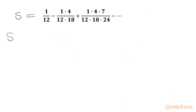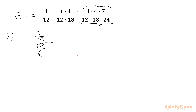We can write S equal to the given series. In the numerator it is an AP whose common difference is 3. In the denominator it is again an AP whose common difference is 6. So let us divide the numerator and denominator by their respective common differences. I will write here (1/3) over (12/6).